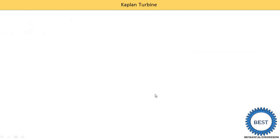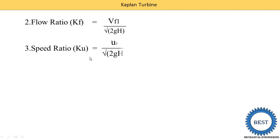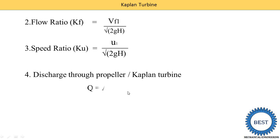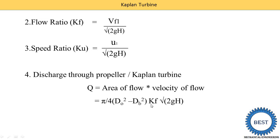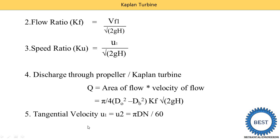Another equation is the flow ratio: Kf = Vf1 / √(2gH). The speed ratio is: Ku = u1 / √(2gH). Discharge for the Kaplan turbine is: Q = A × Vf, where A = (π/4)(Do² − Db²) and Vf1 = Kf × √(2gH). The tangential velocities are: u1 = u2 = π × D × N / 60. Using these equations, we are able to solve various problems and design the Kaplan turbine.